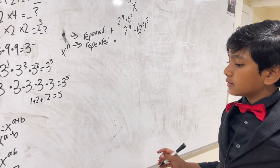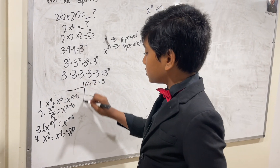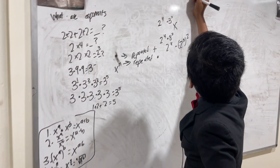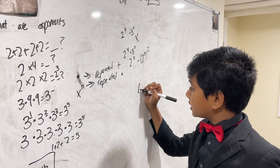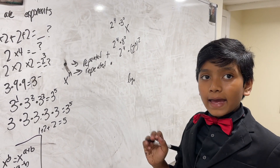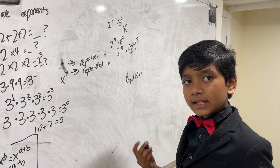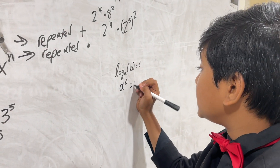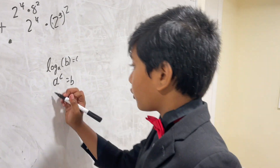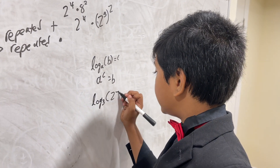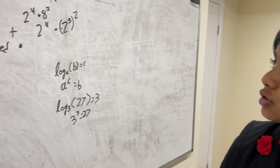Those are the four rules of exponents. Now, the second topic: logarithms. Logarithms are pretty simple — if log base a of b equals c, then a to the c must equal b. For example, log base three of 27 is three, because three to the third is 27.